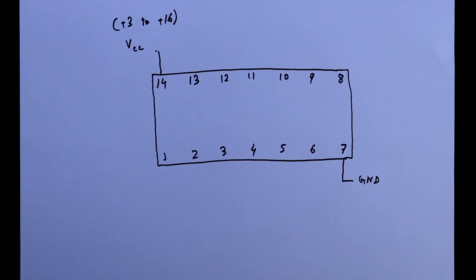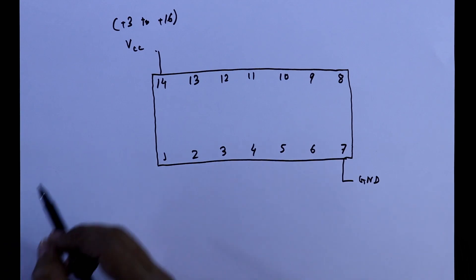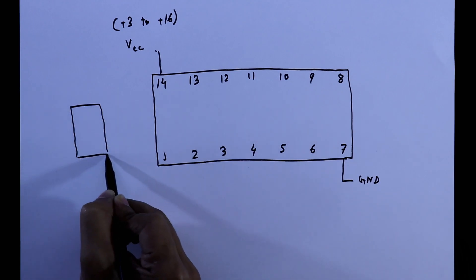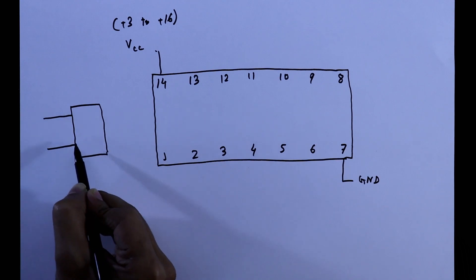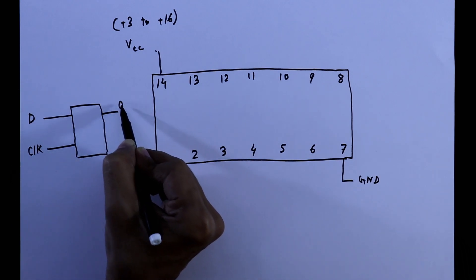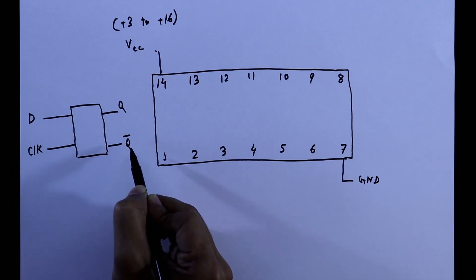I already explained D flip flop using NAND gate, link in the description below. In that video I have explained the D flip flop and it has 4 pins: clock, data that is D, Q and Q bar as output.